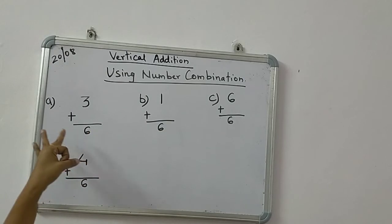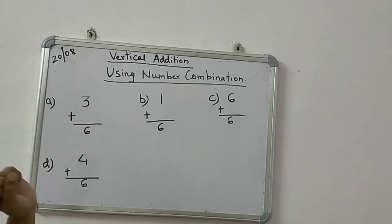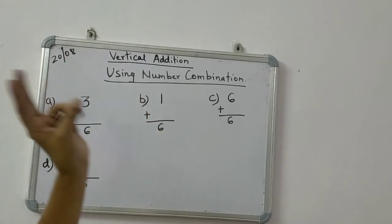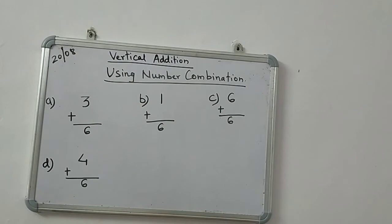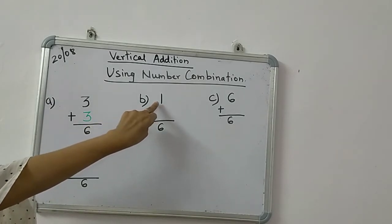So how much do we have to add to 3 to get 6? 3 ke baad aapko aur kitna add karna padega? Dekho, 3 ke baad 4, 5, 6. So 3 plus 3 is equal to 6. Okay, next one.